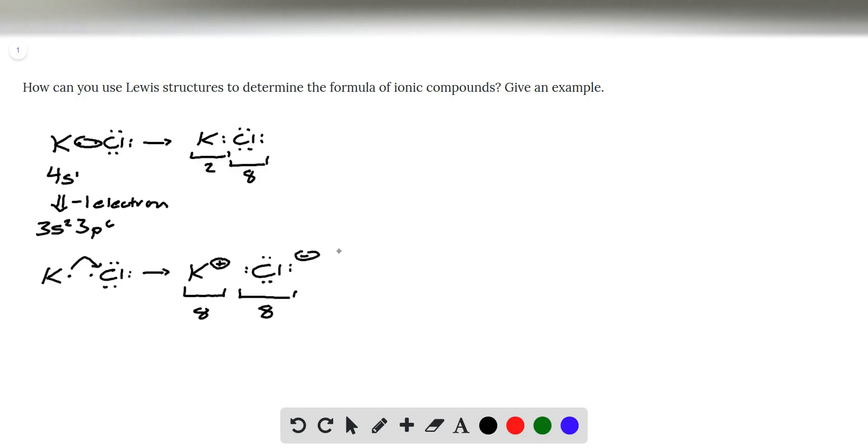We can use this for other elements as well to predict how they're going to bond. So another example would be with something like aluminum. Aluminum is in group 3a, which means it's going to have three valence electrons. Now again, if you look at covalent bonding, you run into the same problem that we ran into with potassium. If aluminum was to form covalent bonds with chlorine, it could at most get a total of six electrons, which is not a full octet.